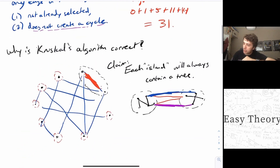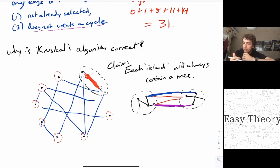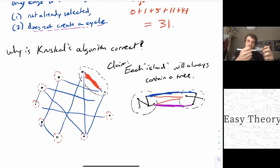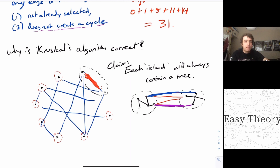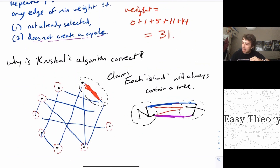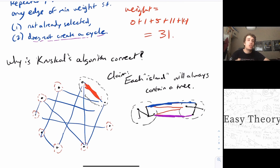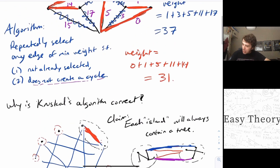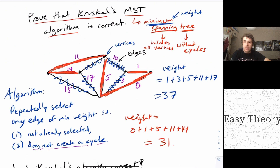So that's a proof of Kruskal's algorithm, purely because we're maintaining these islands. Each island will always have a tree within it, and all we need to do is pick an edge that goes across from one island to another. Since each one is always a tree, at the end we'll always have a tree. It will be spanning because we'll end up with one island, reducing the number of islands by one each time. And it will be minimum weight because we always pick the edge of minimum weight. I hope that was interesting — please like the video, subscribe, and support me on Patreon if you'd like. I'll see you next time.